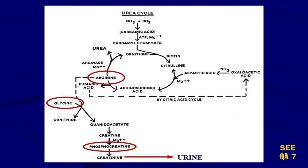Arginine contains three ammonia molecules. It gives off two of them in the form of urea, which is then excreted in the urine. It becomes ornithine and keeps the cycle going. If you don't have enough arginase enzyme, or if there's not enough manganese to activate it, the arginine with all its ammonia has to do something — so it combines with glycine.